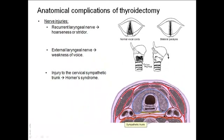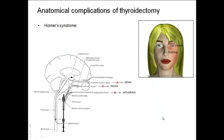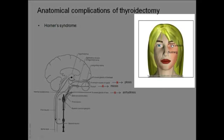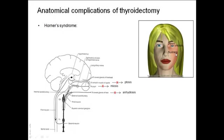The cervical sympathetic trunk is an extension upwards of the thoracic sympathetic trunk. If this trunk is injured, it results in Horner's syndrome, which includes ptosis, miosis, anhydrosis, and flushing of the face.